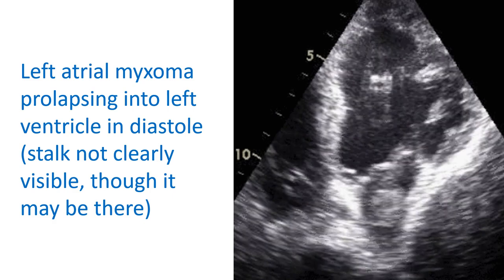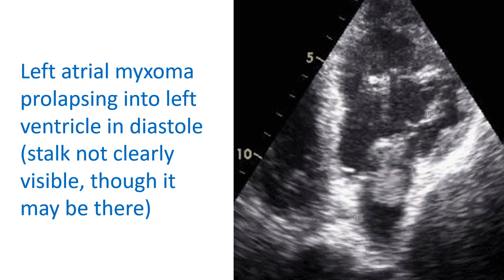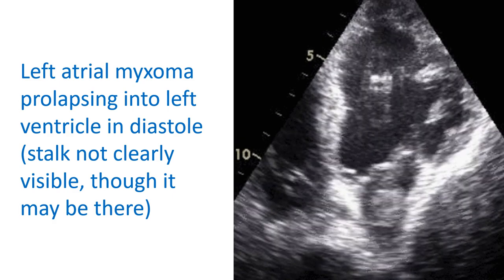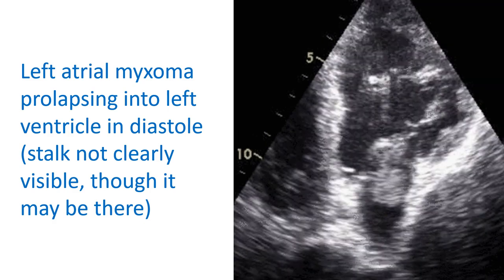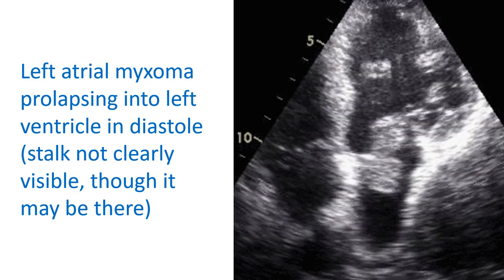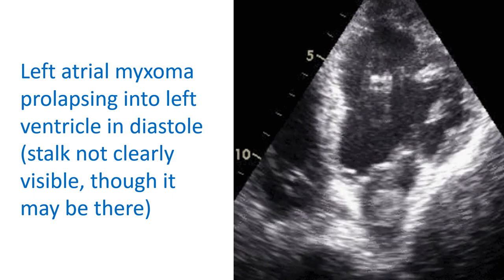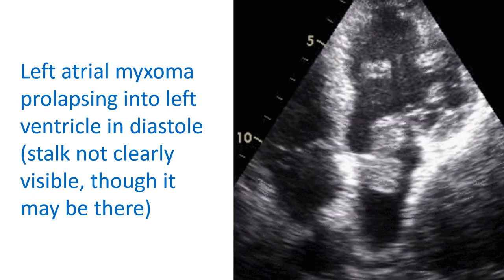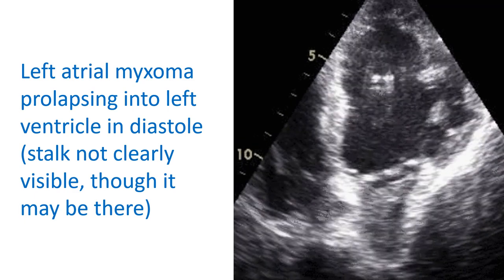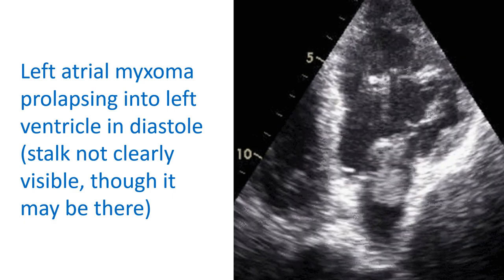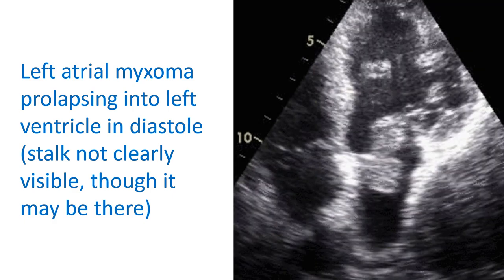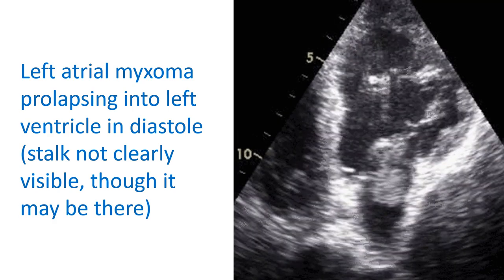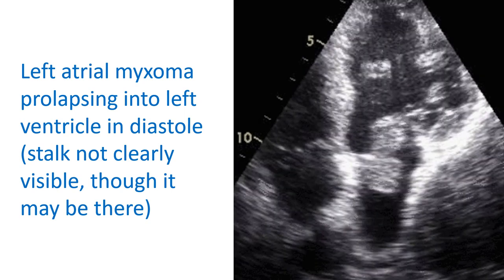A thrombus will not have a stalk, unlike a left atrial myxoma which often has a stalk, though sessile myxomas are also seen. Thrombus responds to thrombolytic therapy with a significant risk of major embolism in the process, but a giant organized thrombus responds poorly to thrombolysis. In case of a left ventricular mass, associated regional or global hypokinesia may favour the diagnosis of thrombus, as may associated systemic lupus erythematosus or antiphospholipid syndrome.